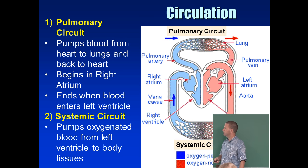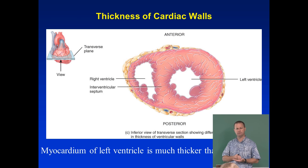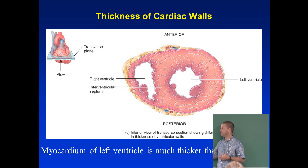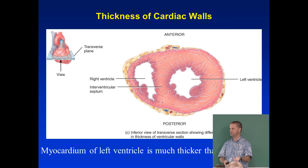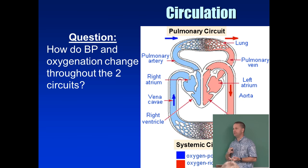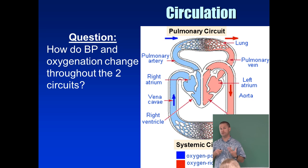The systemic circuit goes from the left ventricle to everywhere else in the body, so the left side of the heart must be even stronger — it's pumping through far more blood vessels than the pulmonary circuit. If you cut the heart in cross-section, the left chamber is visibly more muscular. We need to understand how blood pressure and oxygenation change throughout both the pulmonary and systemic loops.